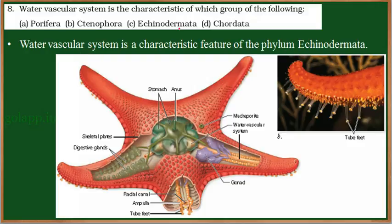We have four options. We need to identify which group of organisms has the water vascular system. The water vascular system is found in the Echinoderms — organisms belonging to the phylum Echinodermata. Here is the structure of a starfish.